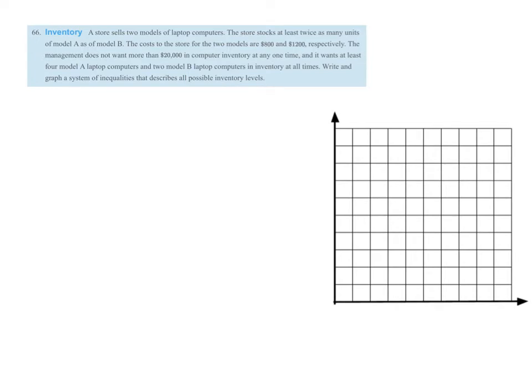So let's write our inequalities. Model A laptop, I'm going to call that X, and then Model B laptop will be my Y value. So it helps me with graphing. We know that the costs of each model are $800 for A, $1,200 for B, but they don't want more than $20,000 in computer inventory. So the first inequality will be $800X plus $1,200Y and not more than, so it has to be less than or equal to $20,000.